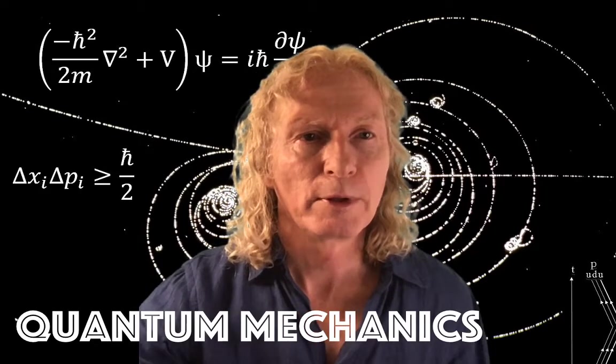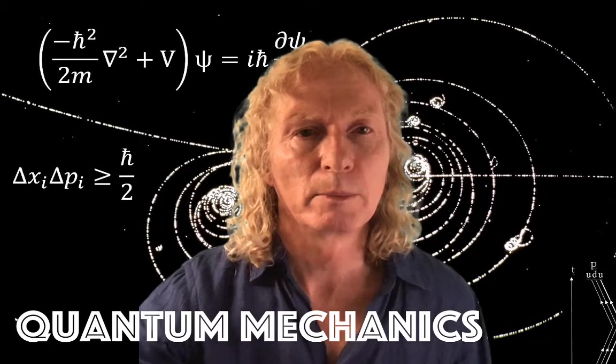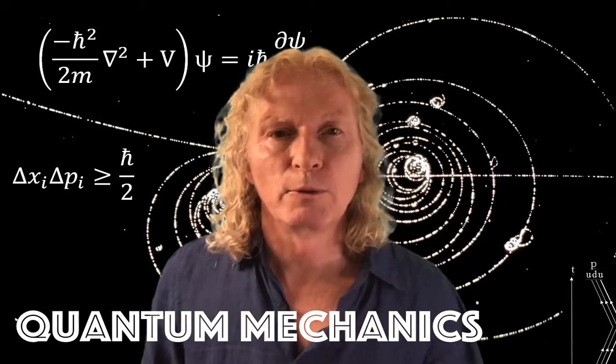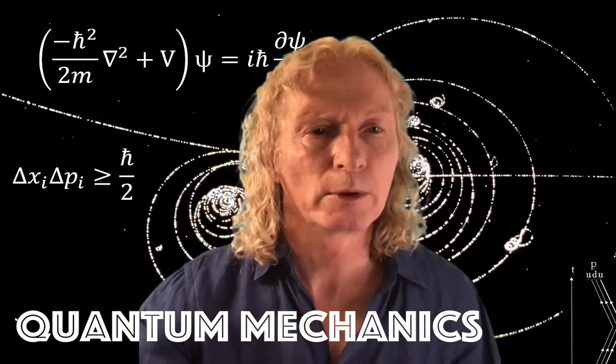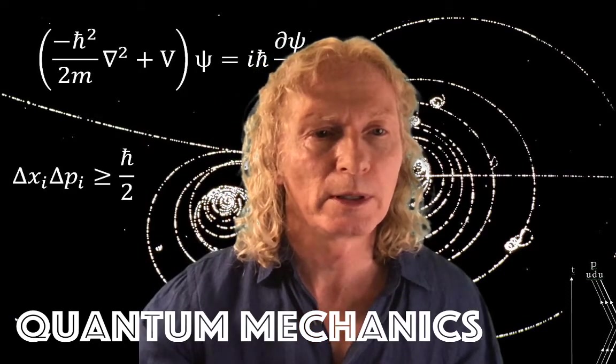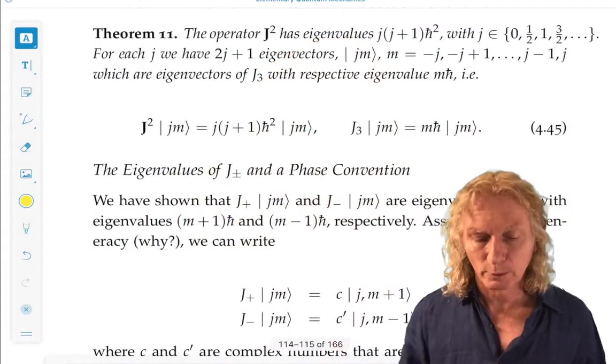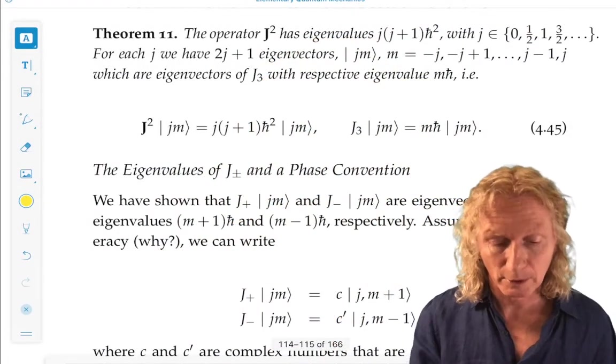We're going to finish up a couple of things about quantum angular momentum that were left unfinished from last time before we go on to computing matrix representations with respect to the eigenvalue, eigenvector structure that we developed that's encompassed in this theorem.